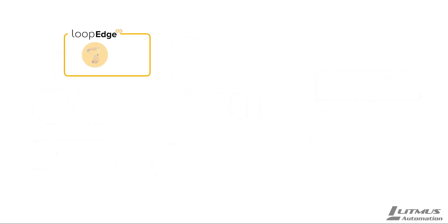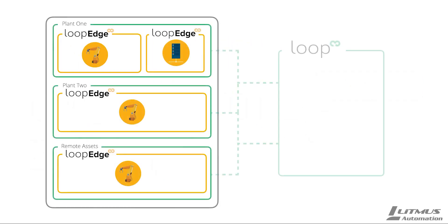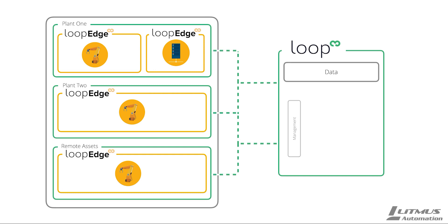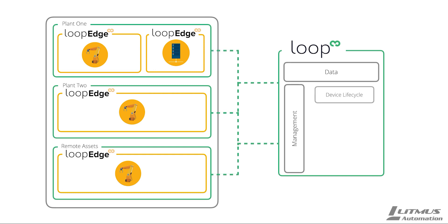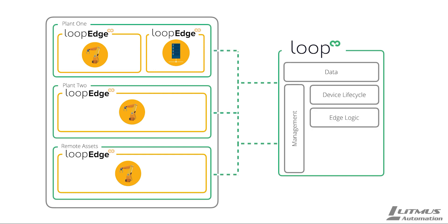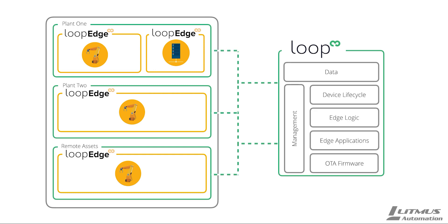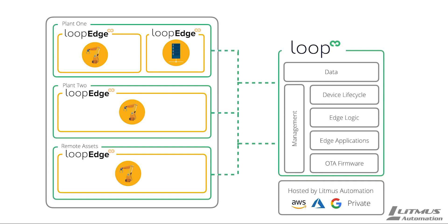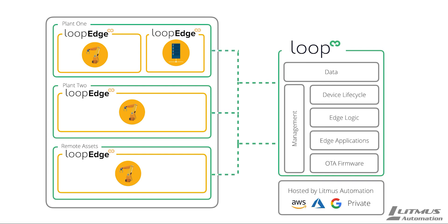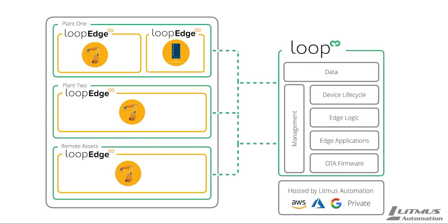Allowing you to scale with confidence using the Loop platform. You can perform data management, device management, logic management, application deployment management, and firmware management. Loop can be hosted by Litmus Automation or self-hosted in your own AWS, Azure, Google, or private cloud.